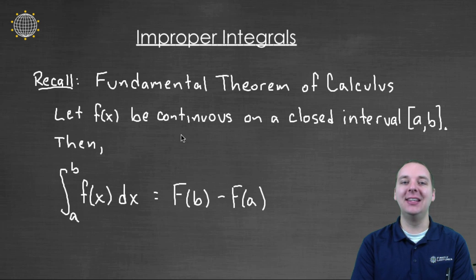It says let f(x) be a continuous function on a closed interval from a to b. Then it says that the integral from a to b of f(x), the way that you find the area under the curve from a to b is you take the antiderivative of the function, that's capital F, and then you plug in b and you plug in a and you subtract. We know that very well. We can do it with little to no trouble at all.